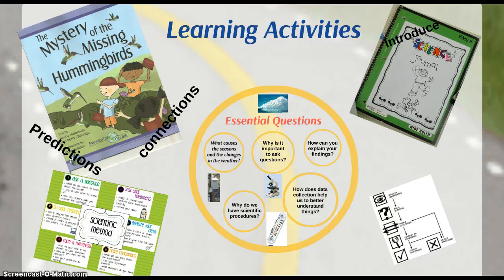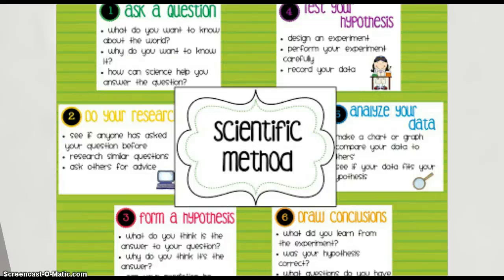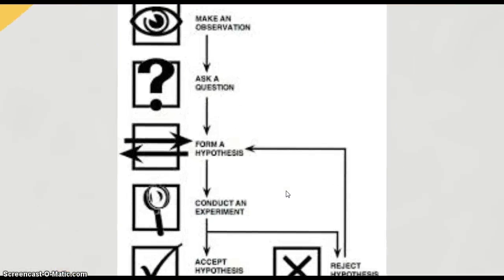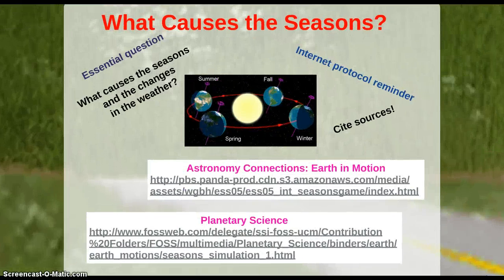Our first learning activity has me reading to students The Mystery of the Missing Hummingbird. They'll do some predictions and connections in regards to that, learning about the scientific process and the scientific method. They'll learn about science journals and how to keep them, and I'll post the essential questions on the wall for constant reference. They'll look at how you ask a question, do your research, form a hypothesis, test it, analyze your data, draw your conclusion — and how it's a continuous circle where you're constantly refocusing your question. Science isn't going to work every time as expected, and you need to conduct multiple experiments to prove or disprove your idea.